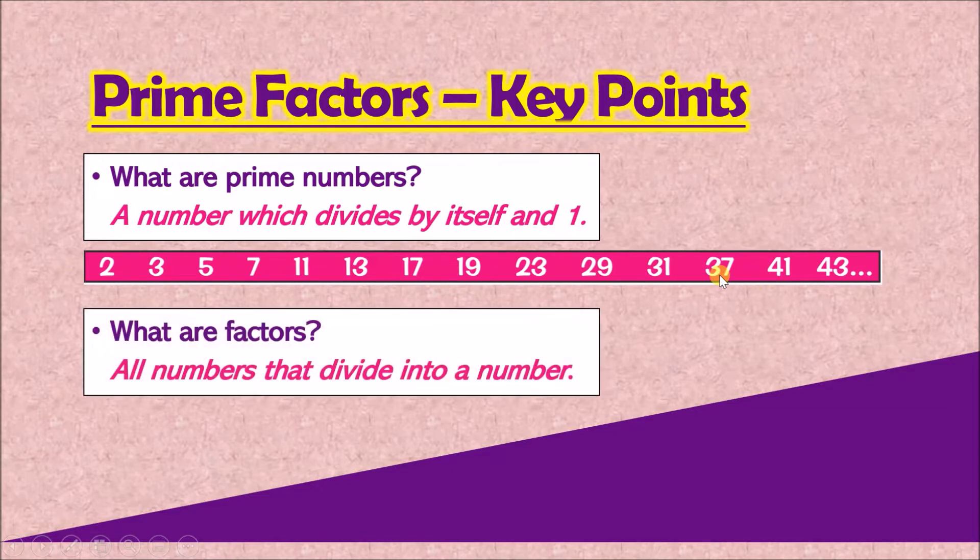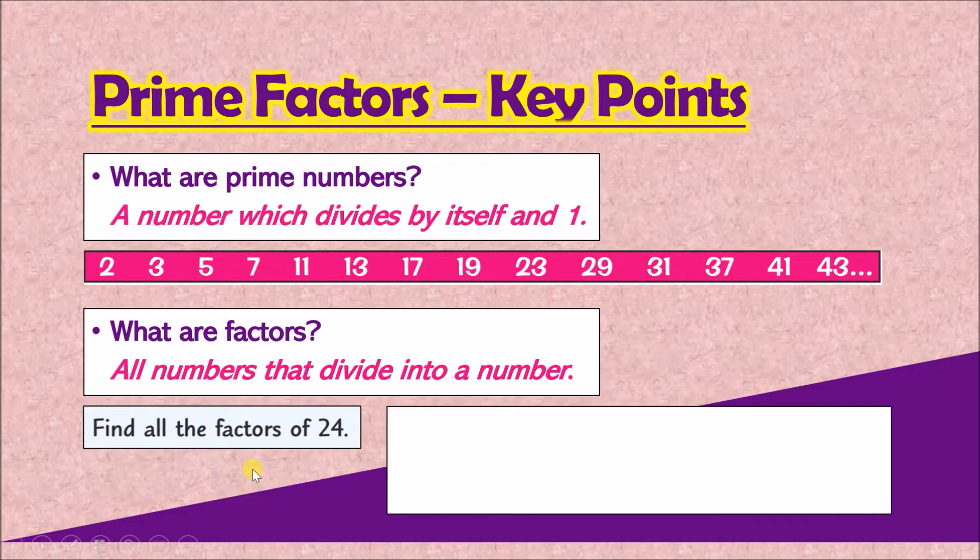Now what about the other word, factors? Well, factors are just all numbers that divide into a number. So think of it this way. To get the number 24, you can do it by doing, let's say, 1 times 24. We could also do it by doing 2 times 12. So you can kind of see that the factors so far are 1, 2, 12, and 24. We have other numbers here as well we can do, like for example, 3 times 8 and 4 times 6. So altogether there are 8 different numbers and all of these are considered factors. And trust me, this is what you actually need to know for prime factors.